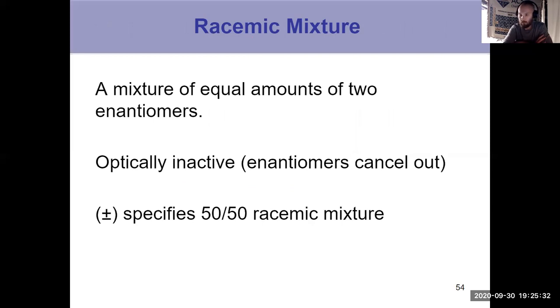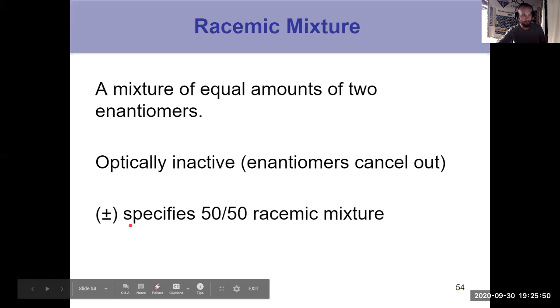And because you have an equal mixture, half of it's rotating it one way, the other half's rotating it the other way. So the net is that it cancels out. The two enantiomers cancel one another out. So a racemic mixture, even though it contains optically active compounds, is itself optically inactive. And we signify that by a plus minus. That specifies we have a racemic mixture specifically, a 50-50 mixture.